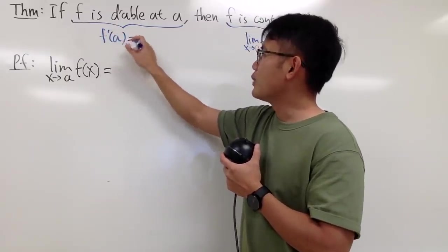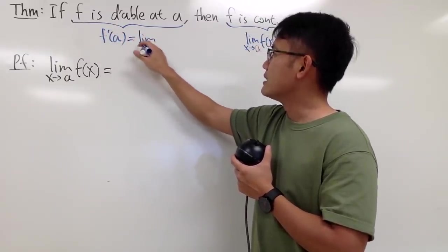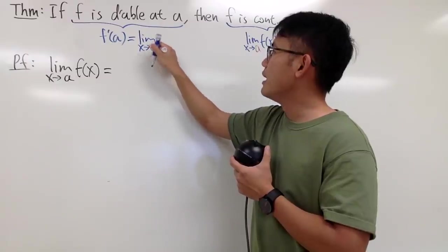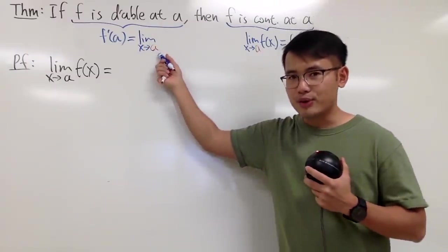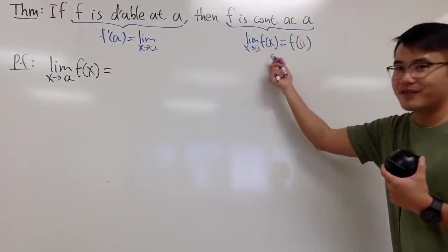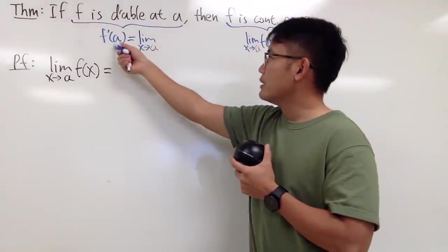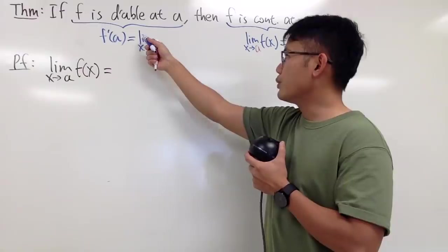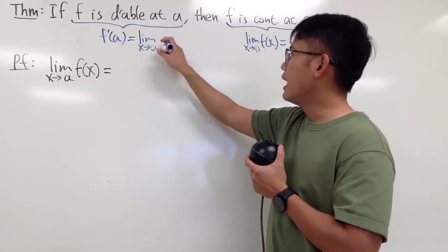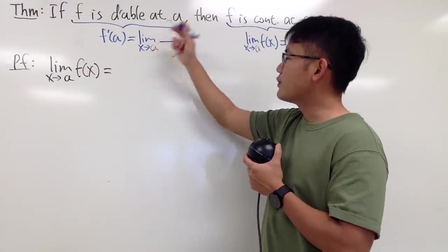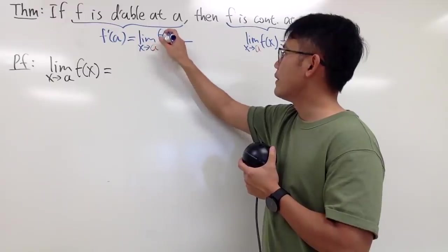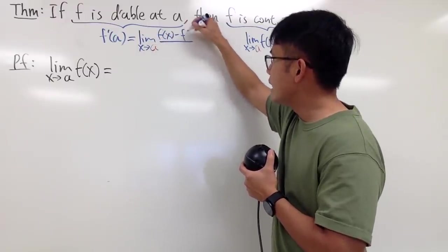In another word, f', I can write this down as the limit as x approaching a. And notice I'm using this version because we have this version already, x approaching a, right? So this right here is equal to the limit as x approaching a. And we have to put down the difference quotient.